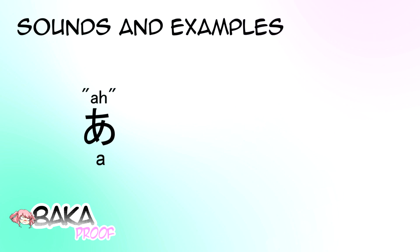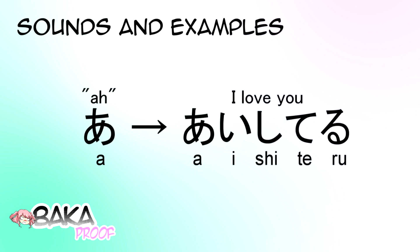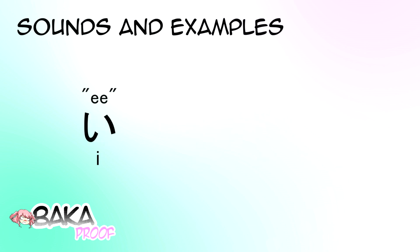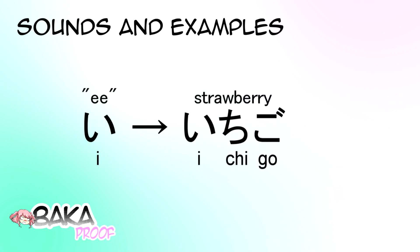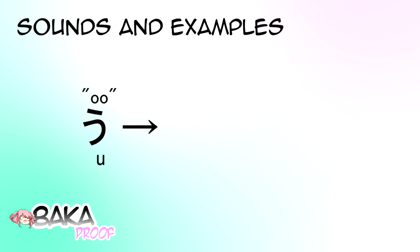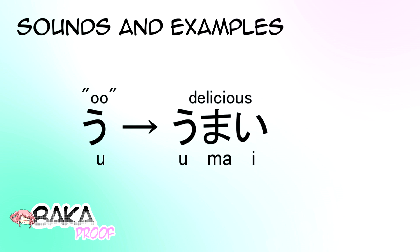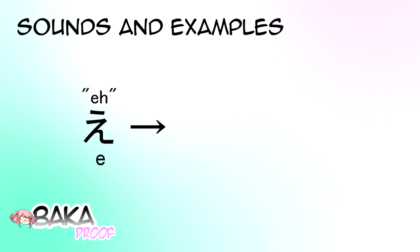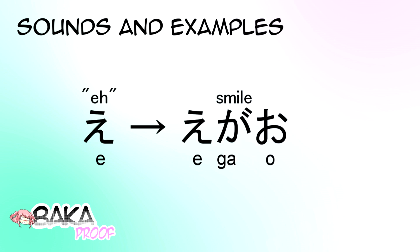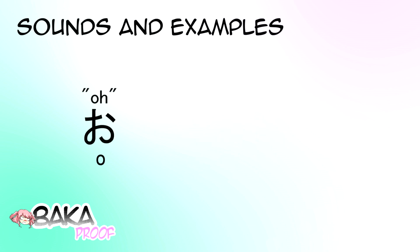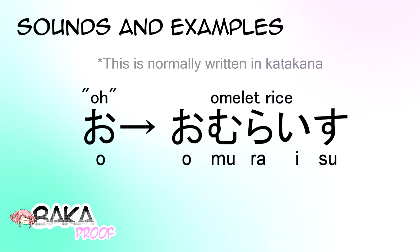The syllables are as follows: A, like aishiteru. I, like ichigo. U, like umai. E, like aigao. O, like omuraisu.